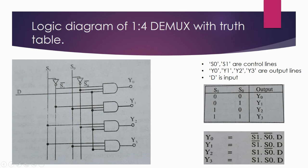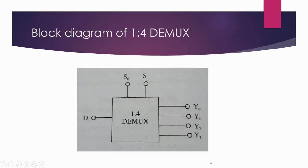Now let's see the equations. Y0 is equal to s1 bar · s0 bar · D. As we saw, in the first case the input was 0 0 but was converted through the inverter, so s1 bar and s0 bar both equal 1, giving the equation s1 bar · s0 bar · D for Y0. The same logic applies for the other outputs.